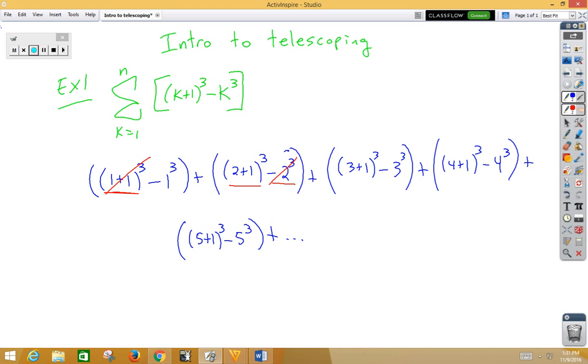Here we have 2 plus 1 cubed, which is 3 cubed. Positive 3 cubed, negative 3 cubed, those would cross out. 3 plus 1 is 4 cubed, positive 4 cubed, and a negative 4 cubed would cross out.